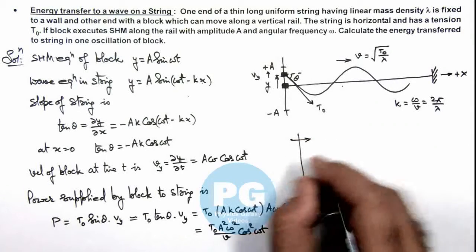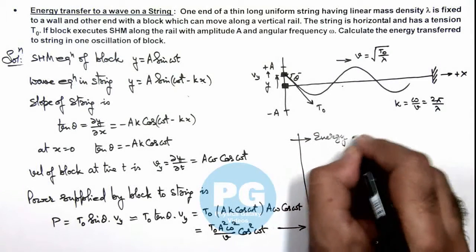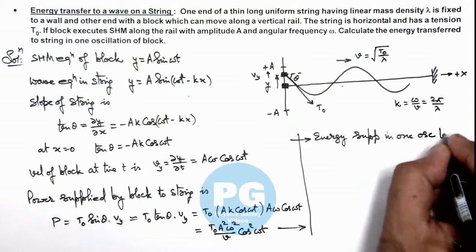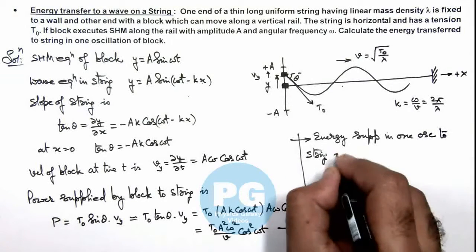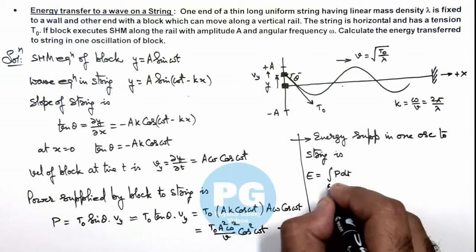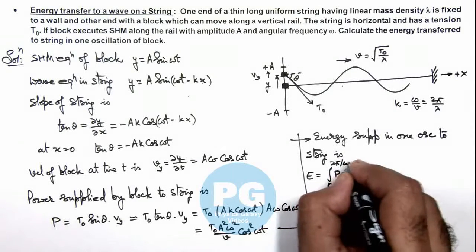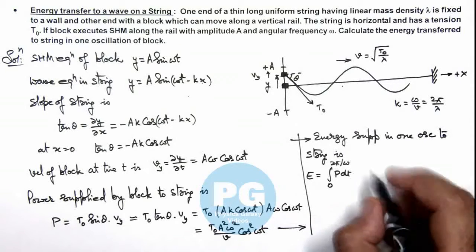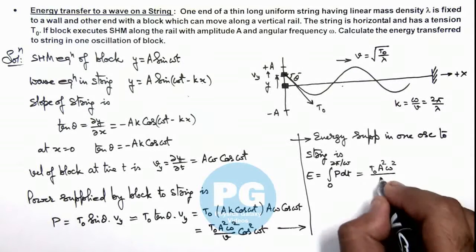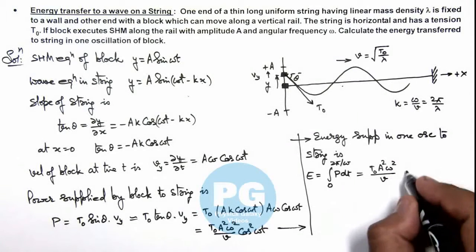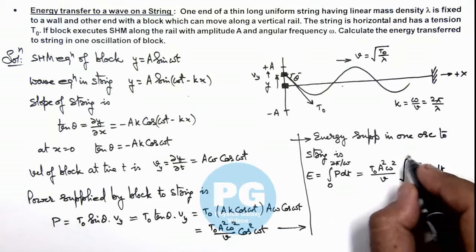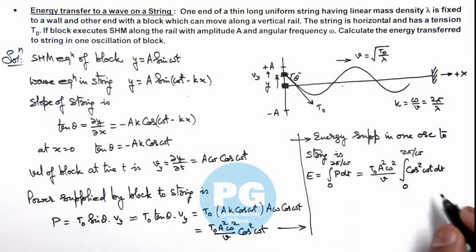This is the power we are getting. If we continue from here we can write energy supplied in one oscillation to the string. This total energy we can write as integration of P dt. For one oscillation we integrate it from 0 to 2π/ω. If we integrate this function this is T₀ A² ω²/v cos²(ωt) dt, and we are integrating it from 0 to 2π/ω.